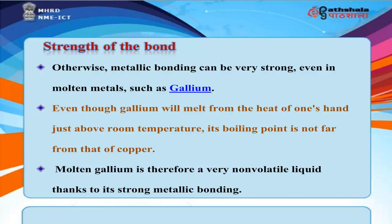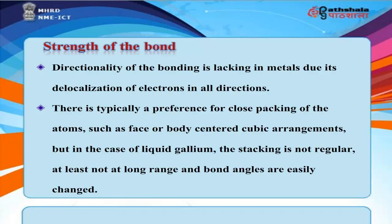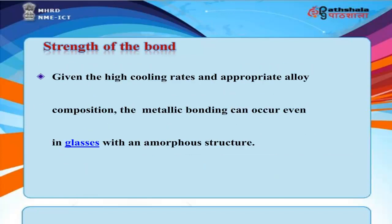Metallic bonding can be very strong even in molten metals such as gallium. Although gallium melts from the heat of one's hand just above room temperature, its boiling point is not far from that of copper. Molten gallium is therefore a very non-volatile liquid due to its strong metallic bonding. Given the high cooling rate and appropriate alloy composition, metallic bonding can even occur in glasses with an amorphous structure.